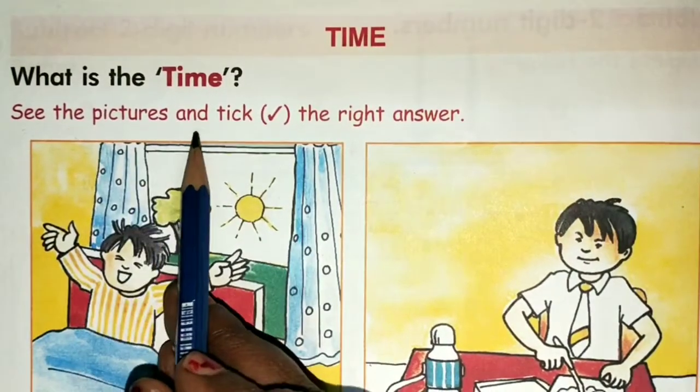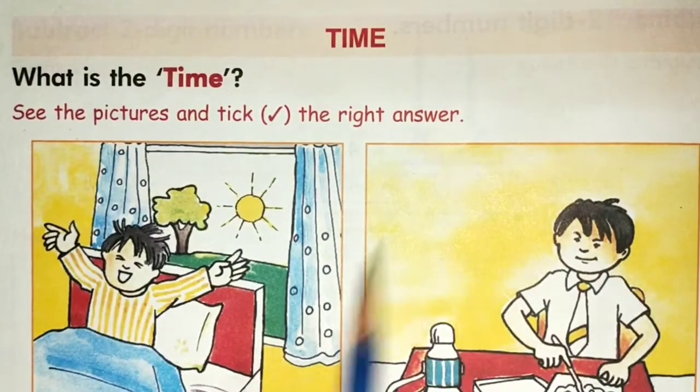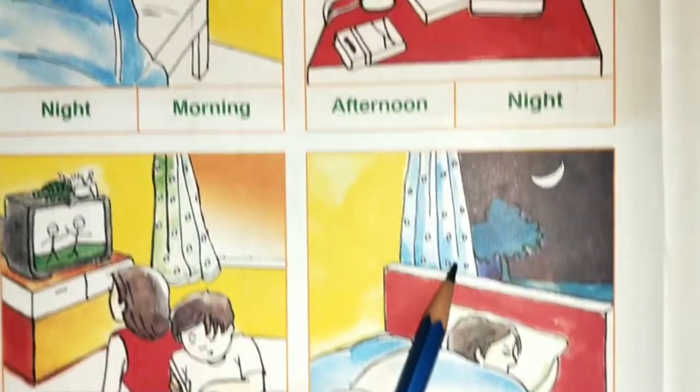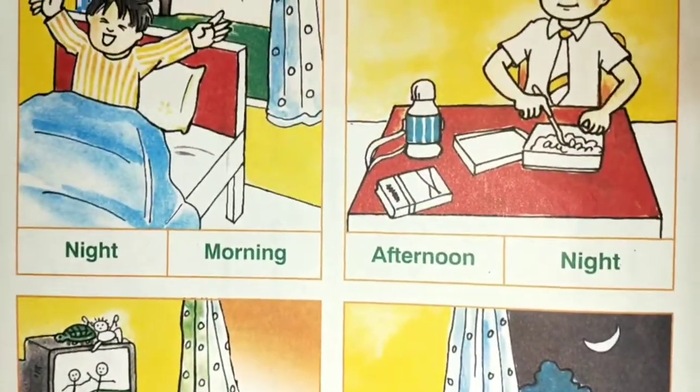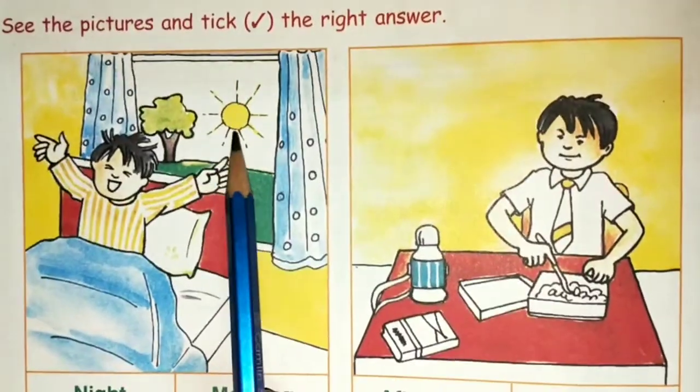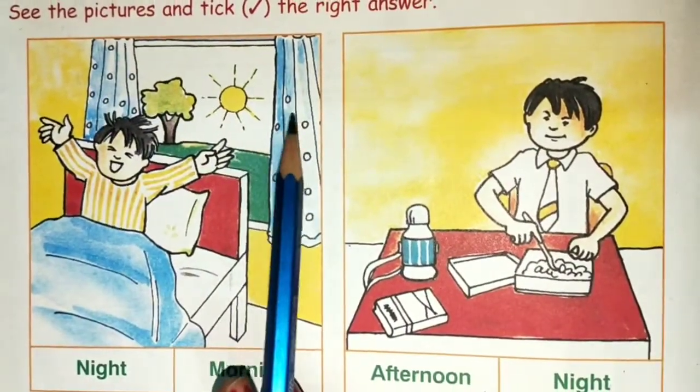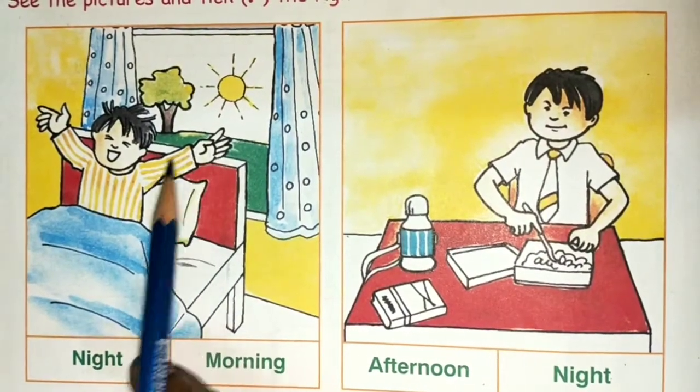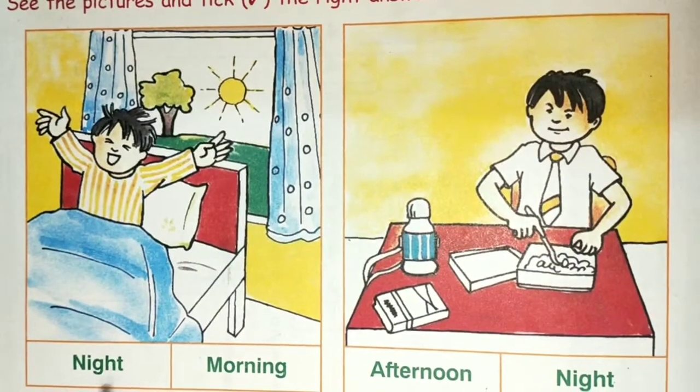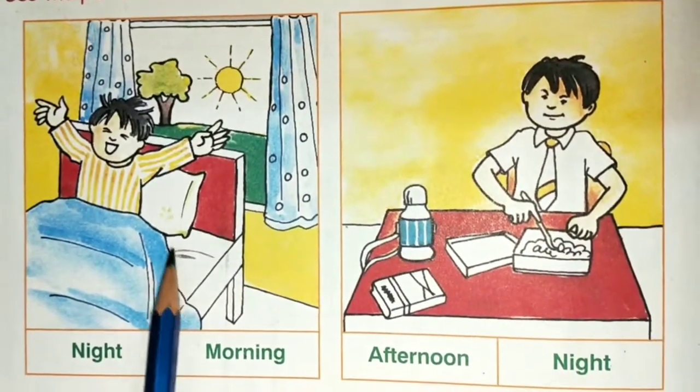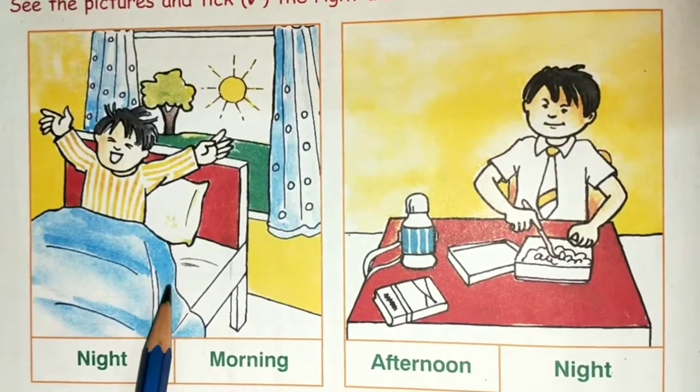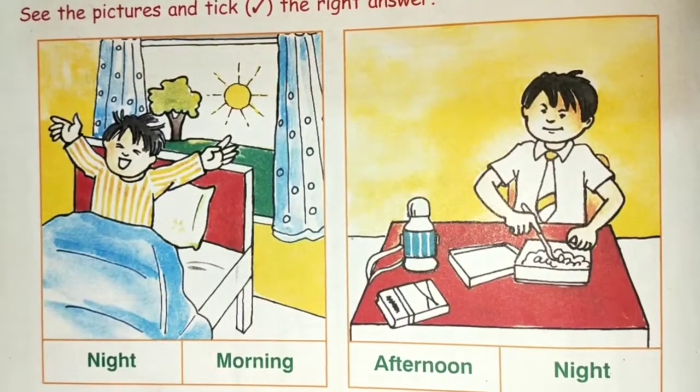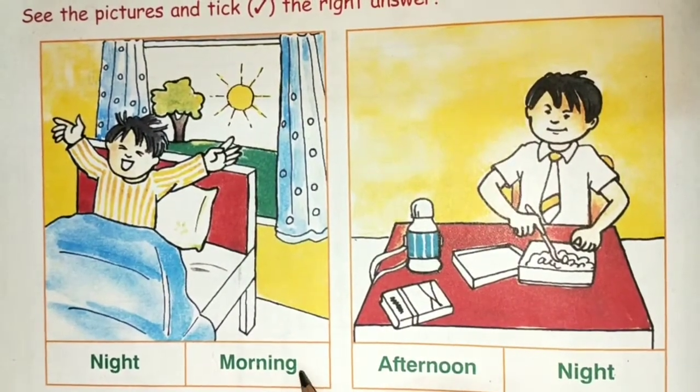See the pictures and tick the right answer. Here we have some pictures. We have to see the right answer and tick the right answer. Here we have sun and curtain. Here we have a girl who is up in the morning. What is the time? This is the morning time because the sun is showing. We will tick the right answer.